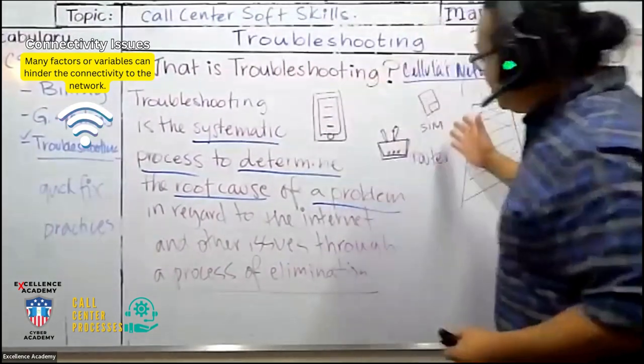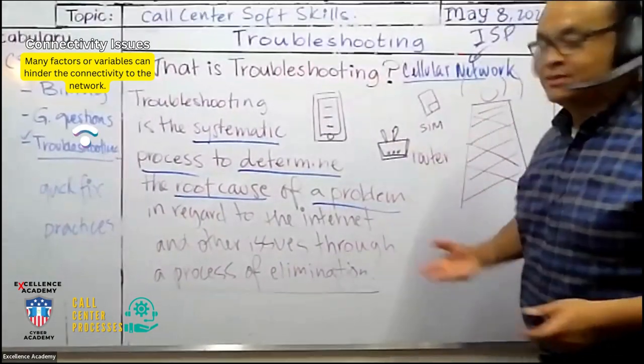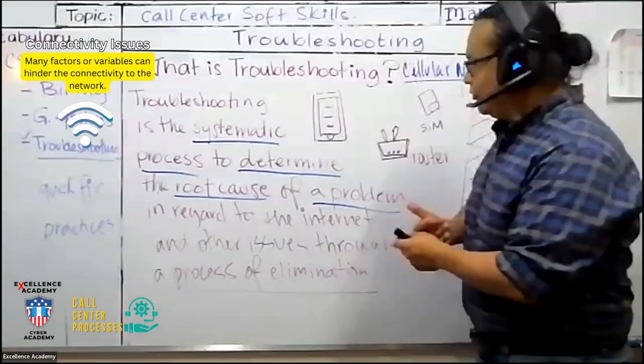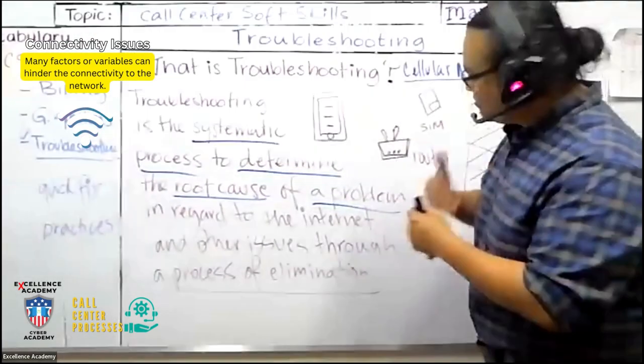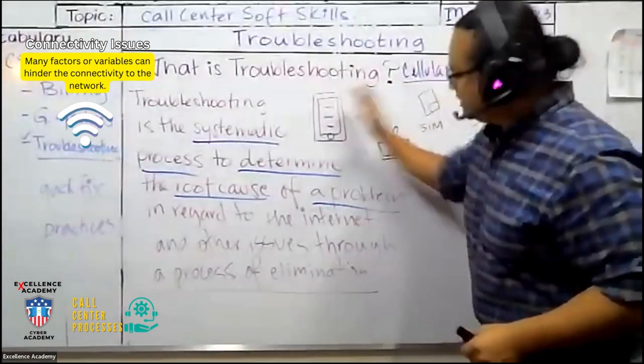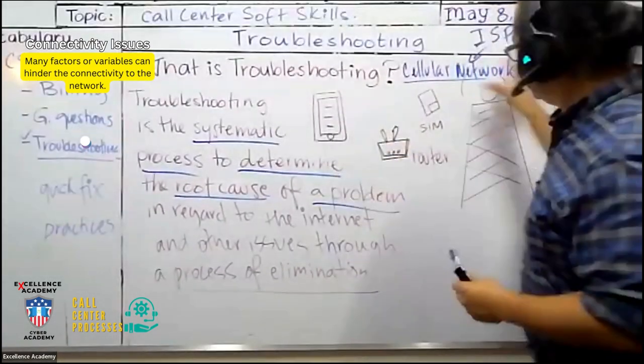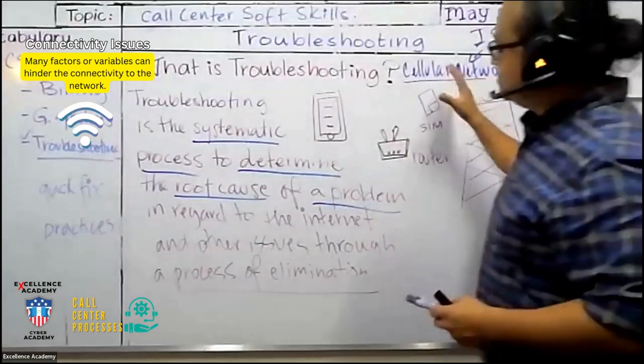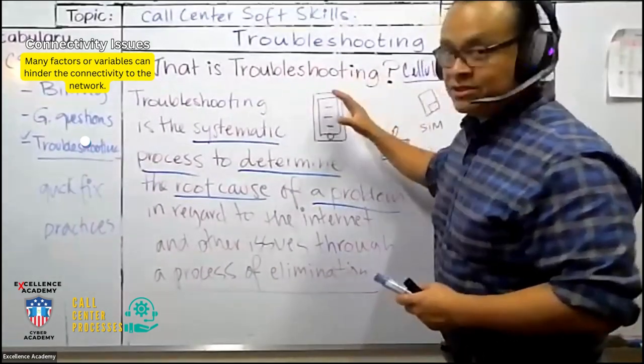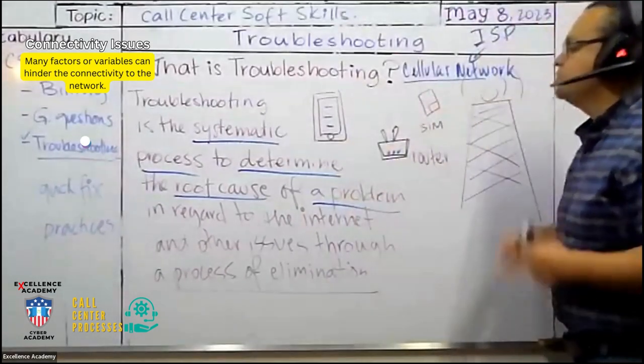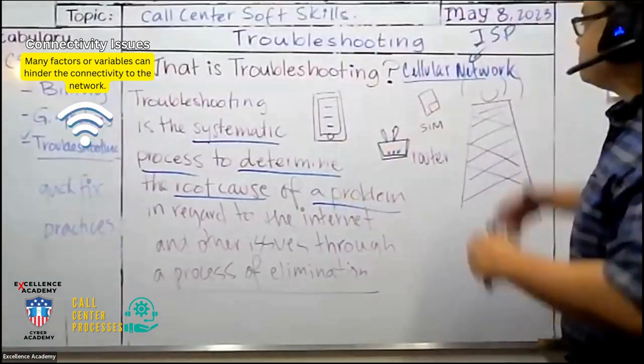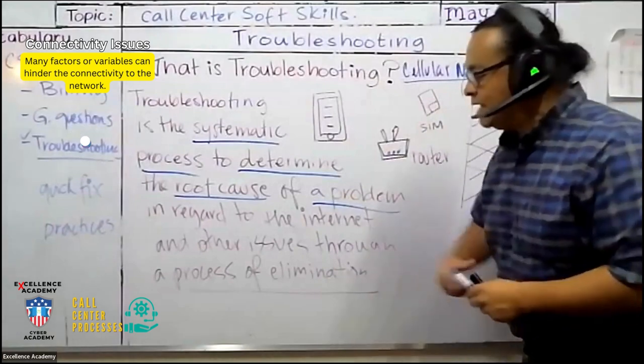Now, there are many factors, many variables that will hinder that the network establish connections. So, this network here will try to establish connection, but there are things that will hinder, that will prevent the cell phone to establish connection.